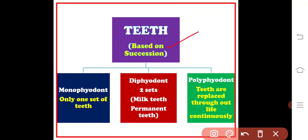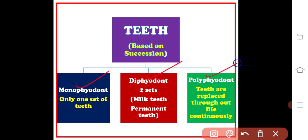Classification of teeth based on succession — that is, replacement of teeth — gives three types: monophyodont, diphyodont, and polyphyodont. Monophyodont: only one set of teeth are present. Diphyodont: two sets of teeth — the primary teeth are called milk teeth or lacteal teeth, and the following teeth are called permanent teeth. Polyphyodont: teeth are replaced continuously throughout the life. If an animal has only one set, it is monophyodont; two sets is diphyodont; many replacements is polyphyodont.